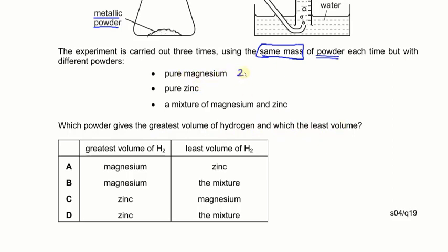Magnesium has an atomic mass of 24 and zinc has an atomic mass of 65. So one mole of magnesium is 24 g and one mole of zinc is 65 g. With the same mass, say 100 g, you get more moles of magnesium, and more moles means more gas. So the greatest volume comes from magnesium. Pure zinc, being heavier with a greater atomic mass, gives the fewest moles and thus the least volume. The answer is A.